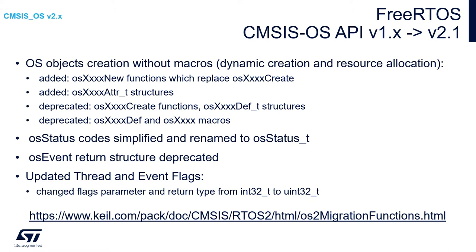We are no longer using the OS event return structure. There is also an update of the thread and event flags, especially in the return value from signed to unsigned 32-bit long. The full list of differences between CMSIS-OS v1 and v2 is available at the link on the CAIL web page, which you can see at the bottom of the slide.